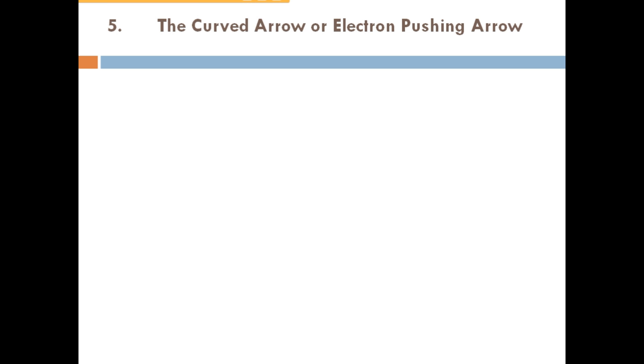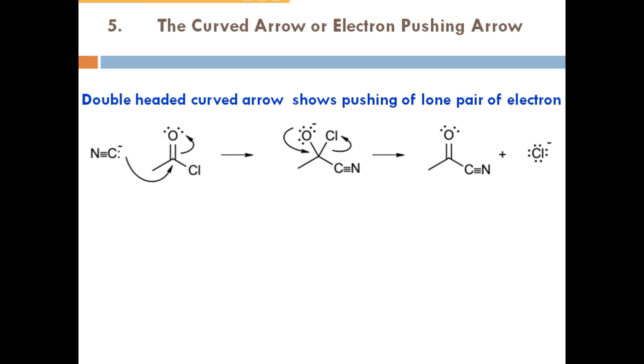The curved arrow or electron pushing arrow. When you are seeing the double headed curved arrow, this means it is a pushing of lone pair of electron toward the electron deficient species.